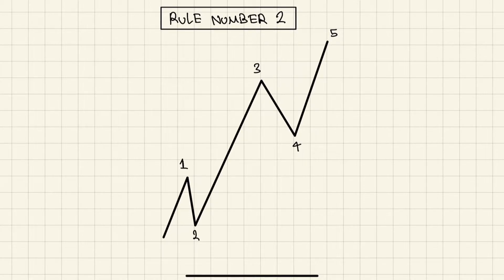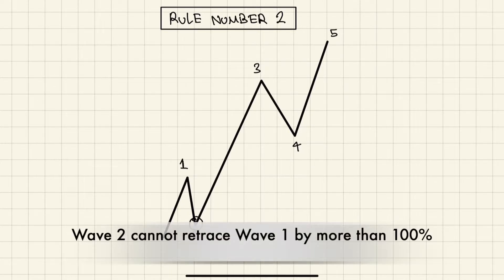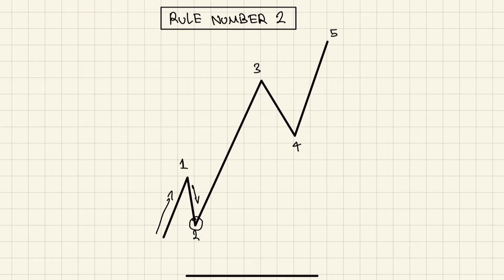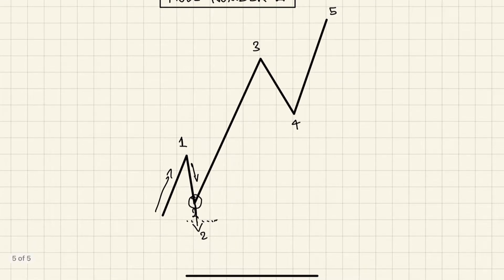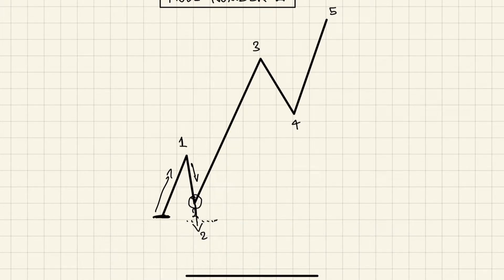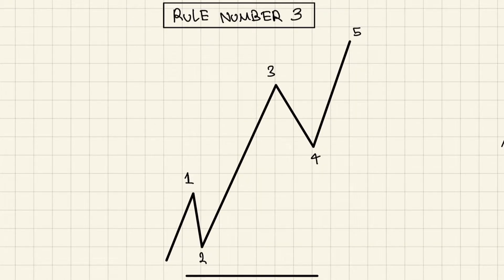Rule number two coincidentally involves wave two. Wave two cannot retrace wave one by 100%, which means it cannot come all the way down to that level. It can do 50, 61, or 78 percent retracement, or even higher, but the rule is it cannot go past where wave one starts.